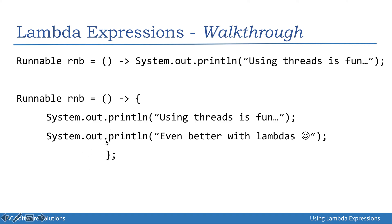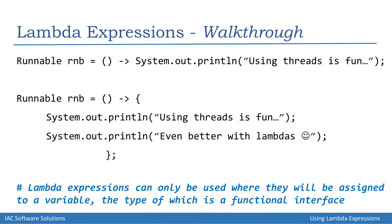If we had more than one line of code in our implementing version of the run method, we would need to put them inside a pair of curly braces followed by a semicolon — remember, this is one statement and every statement in Java is terminated by a semicolon. For emphasis, lambda expressions can only be used where they will be assigned to a variable whose type is a functional interface, as in this example where the variable is of type Runnable, which is a functional interface because it has one single abstract method.